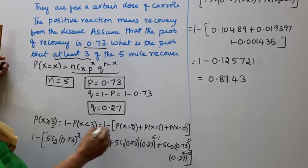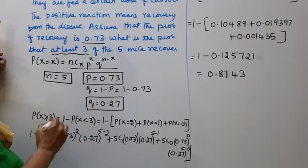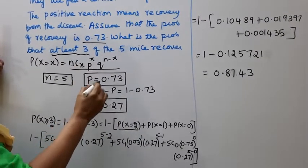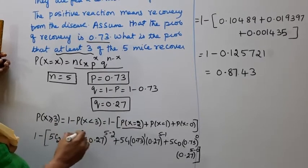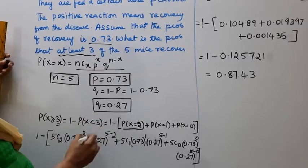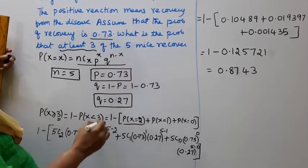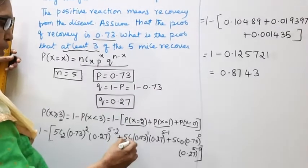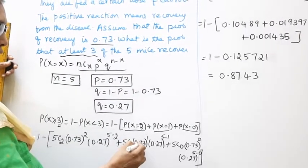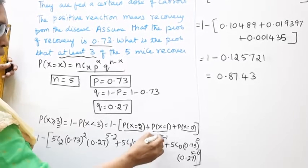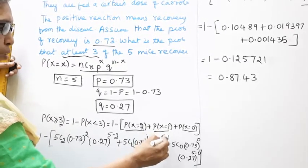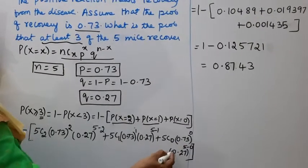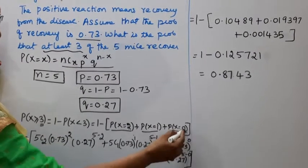1 - [P(X=2) + P(X=1) + P(X=0)]. First, X=2: 5C2 × (0.73)^2 × (0.27)^(5-2). Then X=1: 5C1 × (0.73)^1 × (0.27)^(5-1). Then X=0: 5C0 × (0.73)^0 × (0.27)^(5-0).